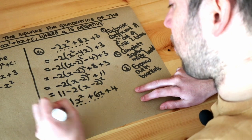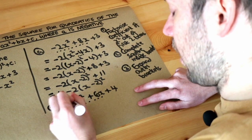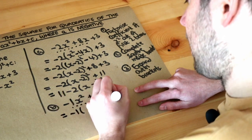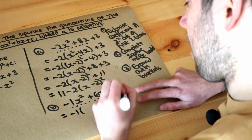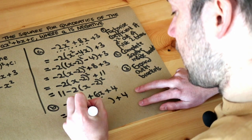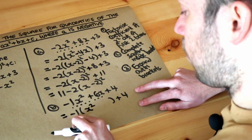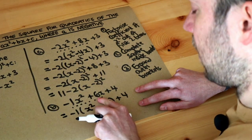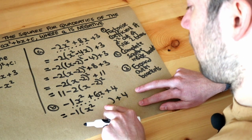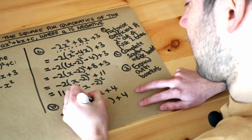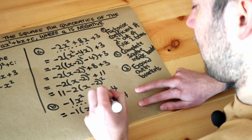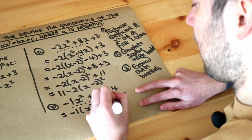We factorize out the minus 1 from the first two terms. We put a bracket, and that gives x squared. Then minus 1 times minus 6 gives positive 6, so we have minus 1 times (x squared minus 6x), and we still have the plus 4 outside.